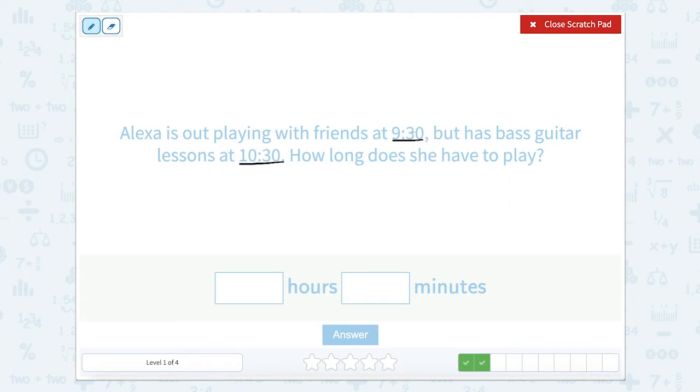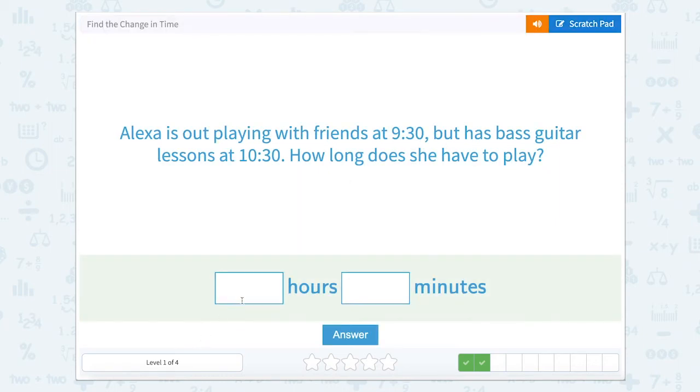So our minutes are exactly the same, but look at 9 to 10. So how many hours are in between 9 and 10? Well, you might know this at the top of your head that 9 and 10 are just one hour apart. So this would be one hour and zero minutes to get from 9:30 to 10:30.